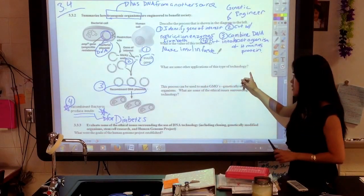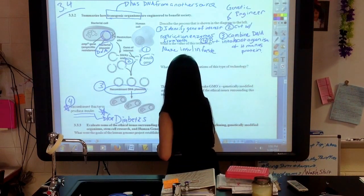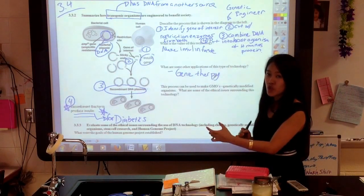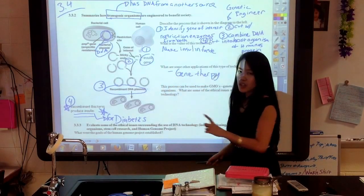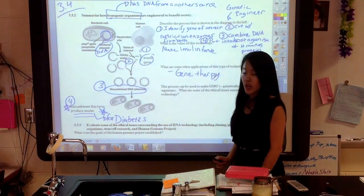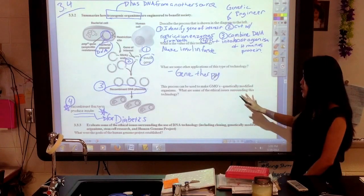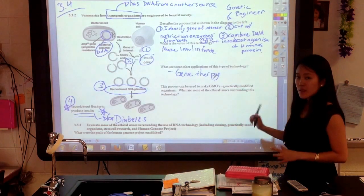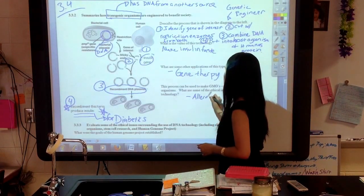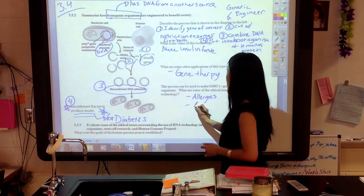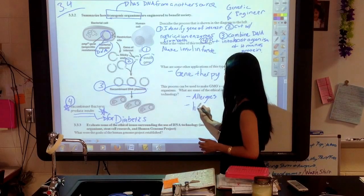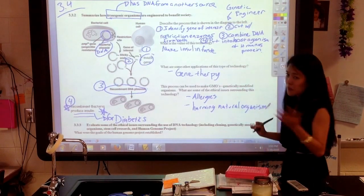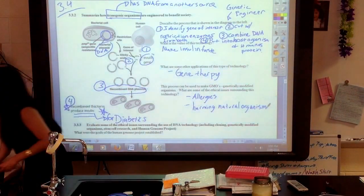Next question, what are some applications of this type of technology? A lot of scientists are looking into how can we use this for gene therapy. How can we change the DNA in a human or give them a gene, perhaps of insulin, so they're actually able to make their own insulin and won't need the insulin for their shots anymore? This process can be used to make GMOs, genetically modified organisms. A lot of times that could be something like food. What are some of the ethical issues surrounding this technology? We worry about things like allergies and we worry about those organisms actually taking over or harming natural organisms that normally live in the area. That could be a plant or an animal.